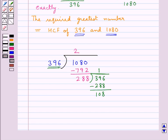In the same way we divide the divisor which is 288 by the remainder 108. Now 108 two times is 216. 216 is subtracted from 288 to get the remainder as 72.